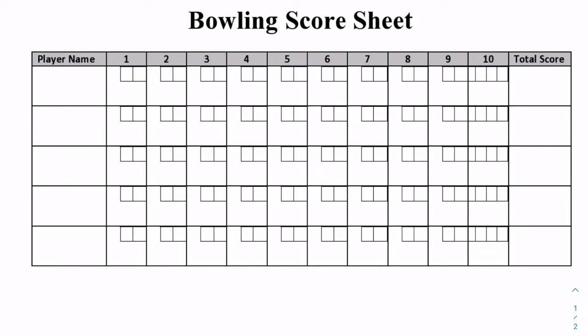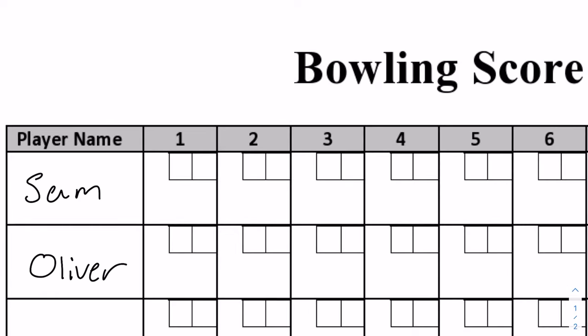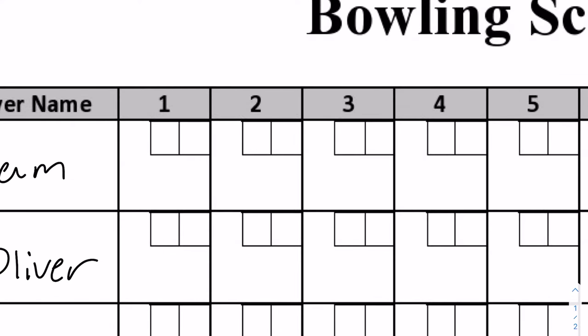The first thing you're going to do is put a name. We're going to put Sam as our first bowler and go through a few different scenarios. I'm going to do two different scenarios to see how the scoring works depending on what the bowler throws. So we're going to do Sam and Oliver as our two people. For Sam, their first throw is an eight and their second throw is a one.